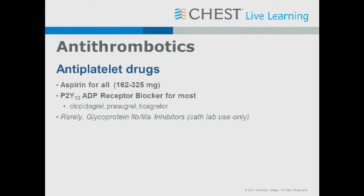Everybody with acute coronary syndrome gets an antiplatelet drug — aspirin is where you start, 162 to 325 milligrams, given as chewable aspirin for faster absorption. The next step is a P2Y12 antagonist or ADP receptor blocker: either clopidogrel, prasugrel, or ticagrelor. There's also the option of intravenous antiplatelet agents like glycoprotein 2B3A inhibitors, but treat those as cath lab drugs — they're almost never administered upstream in patients with non-ST elevation ACS.